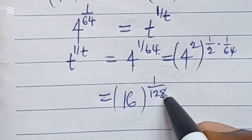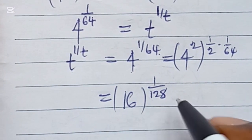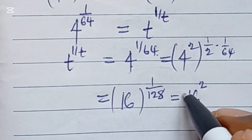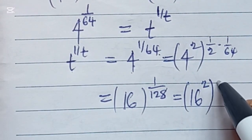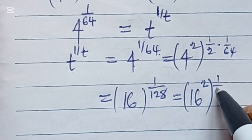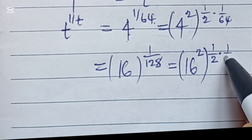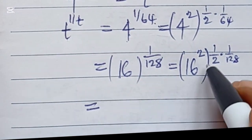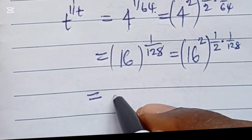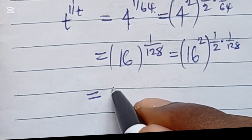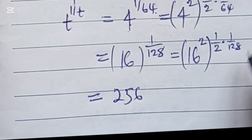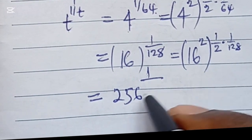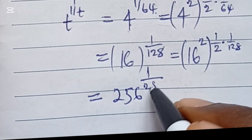So we increase 16 again by saying 16 squared. When you put 16 squared on the inside, you also put an inverse on the outside, leaving 1 over 128. Evaluating: 16 squared gives us 256, and on the outside, 1 over 2 times 128 gives us 1 over 256.